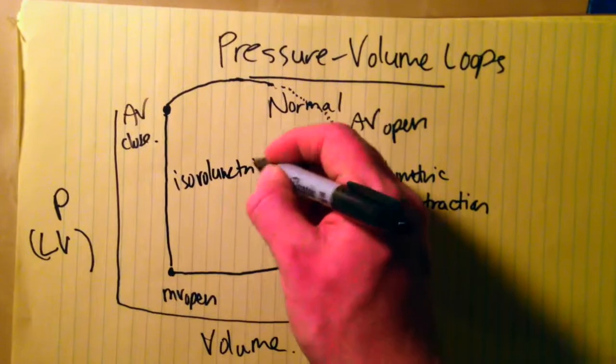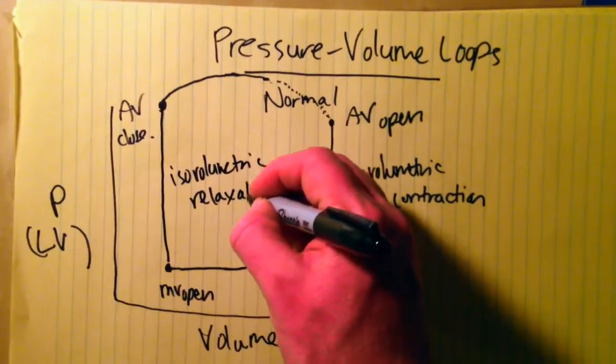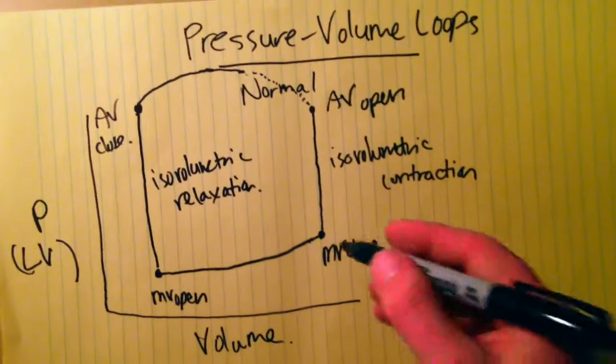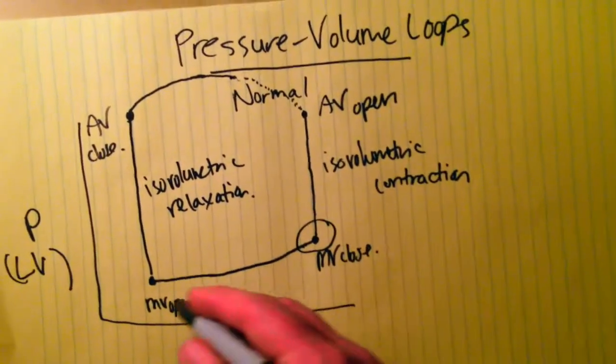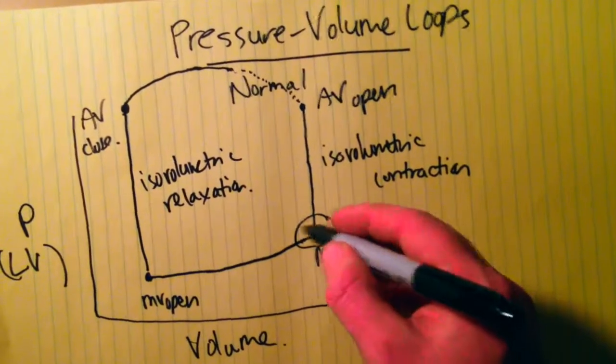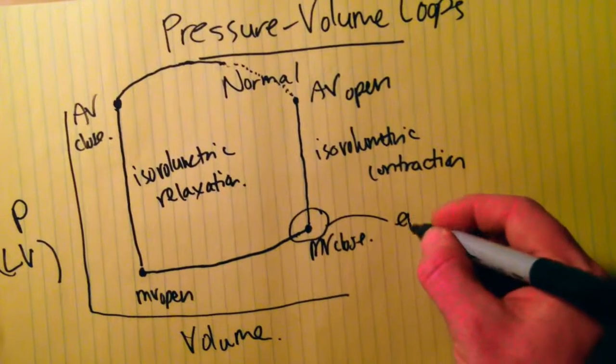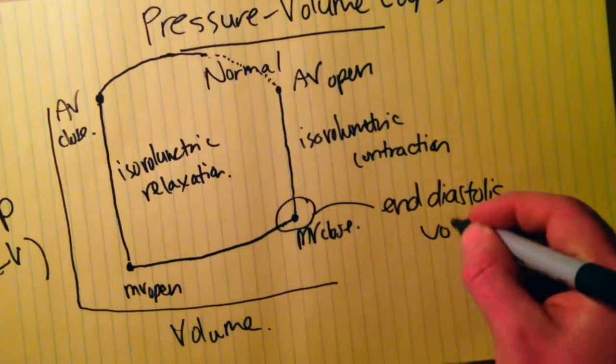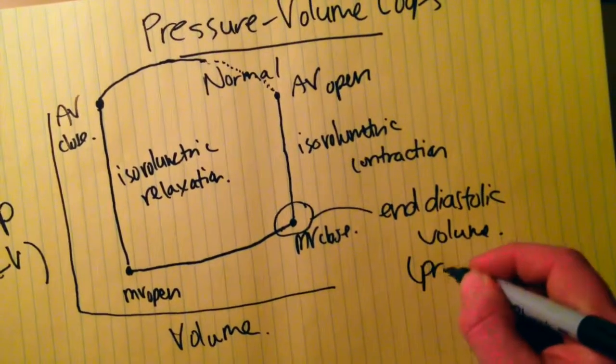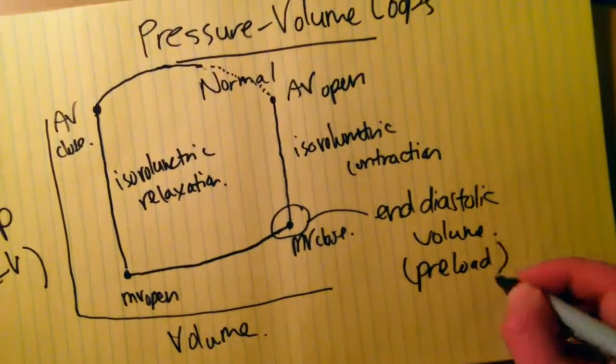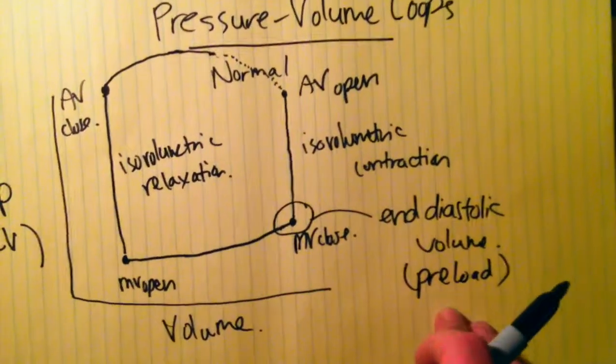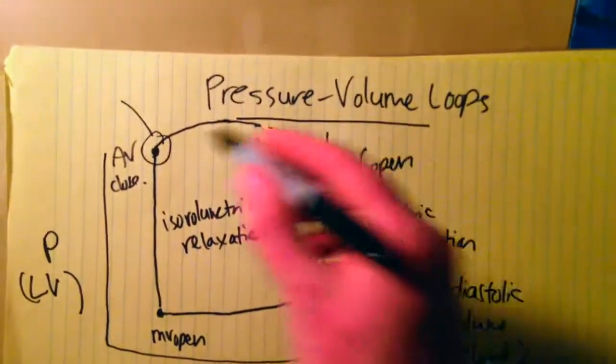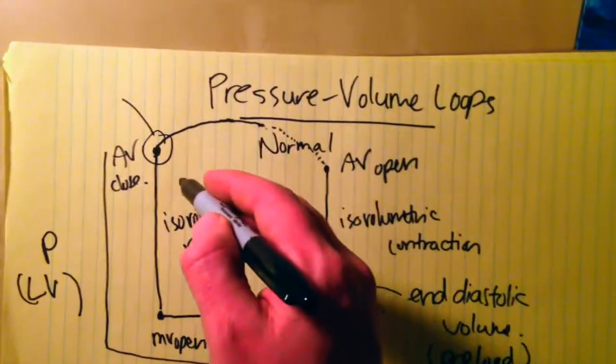There are two important points on this curve that are helpful to note. This point here represents the end of diastole, and we can look at the volume here - this point represents the end diastolic volume, which is essentially analogous to your preload. It's the volume that the ventricle fills with, your filling volume or preload.